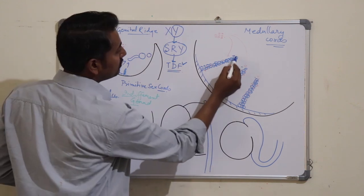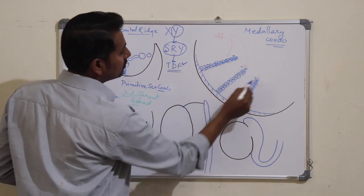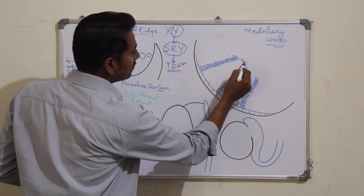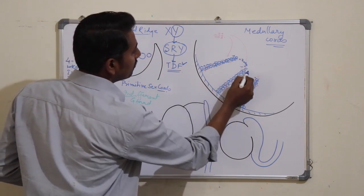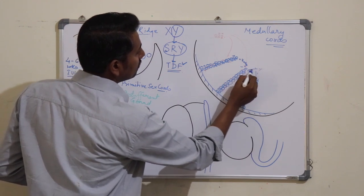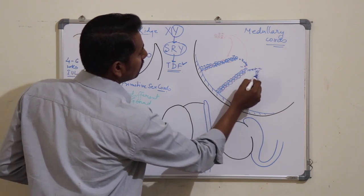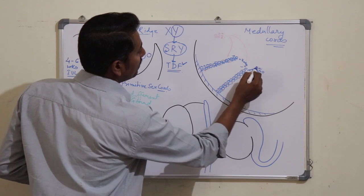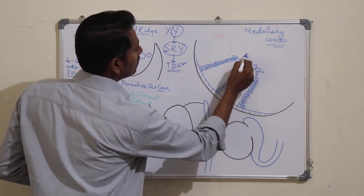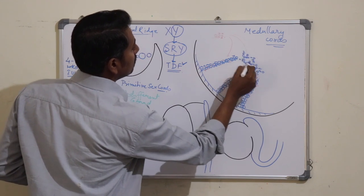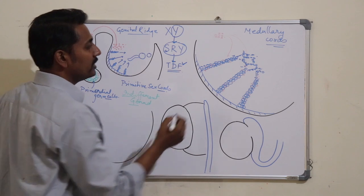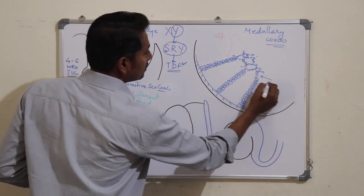The ends of these medullary cords will now anastomose with each other and form a network-like structure, which with further development will form the rete testis.